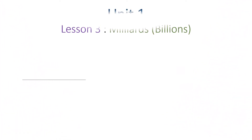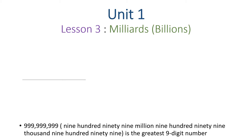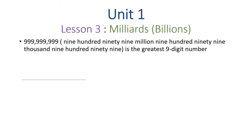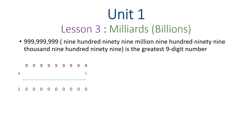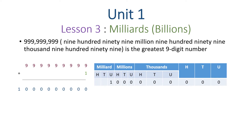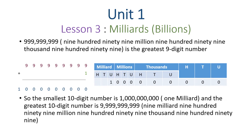Who remembers the greatest nine-digit number? Yes, 999,999,999 is the greatest nine-digit number. If we add one to this number, the answer is one milliard. This is our new number. So the smallest ten-digit number is one milliard, and the greatest ten-digit number is nine milliard, nine hundred ninety-nine million, nine hundred ninety-nine thousand, nine hundred ninety-nine.